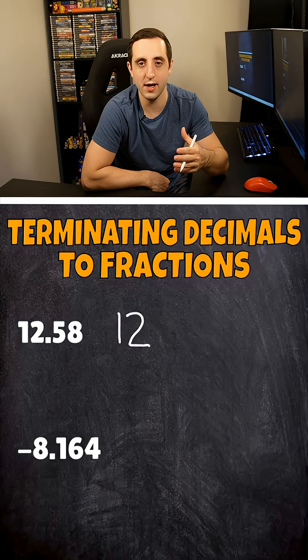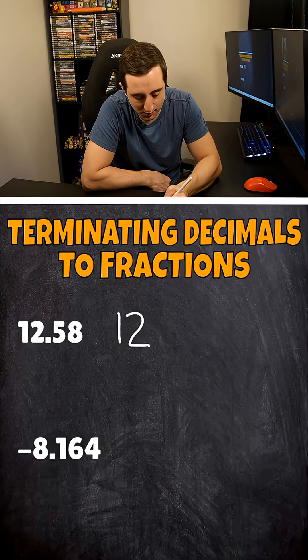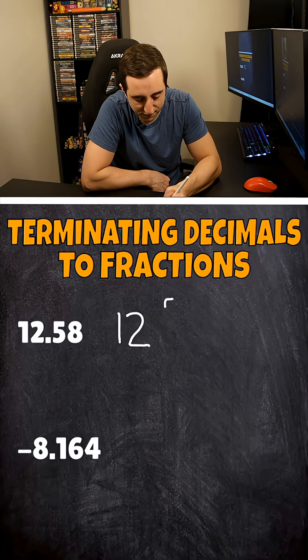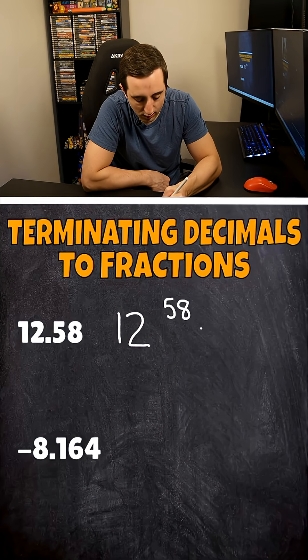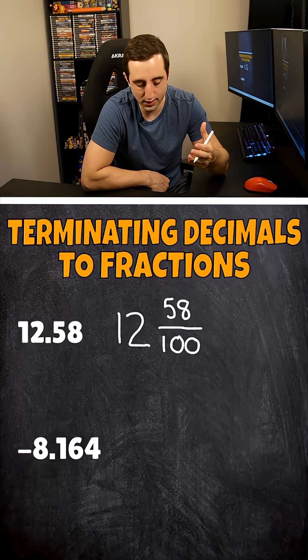However, we have two numbers behind the decimal point, which means we're now in the hundredths place. So when we're making our mixed number, this is going to be a 12 out front. We're going to put a 58 in our numerator and our denominator is going to be a hundred because we have two numbers behind the decimal point and we're ending or terminating at the hundredths place.